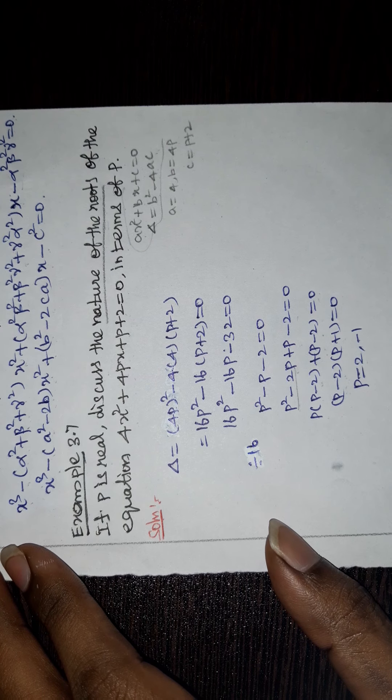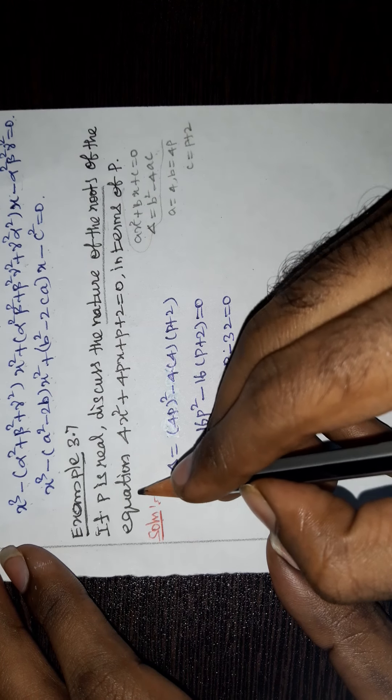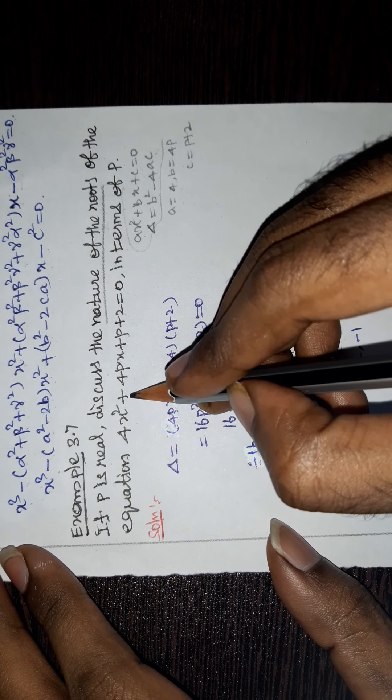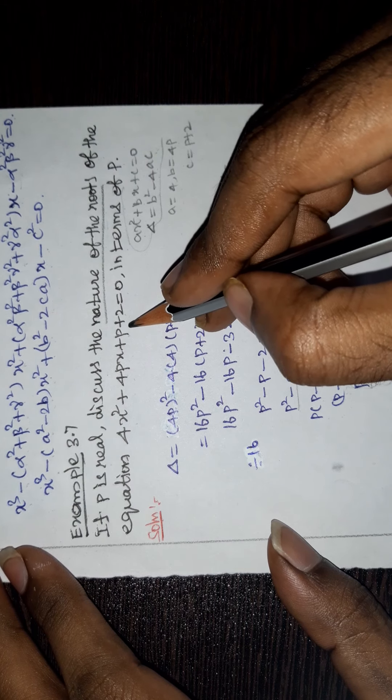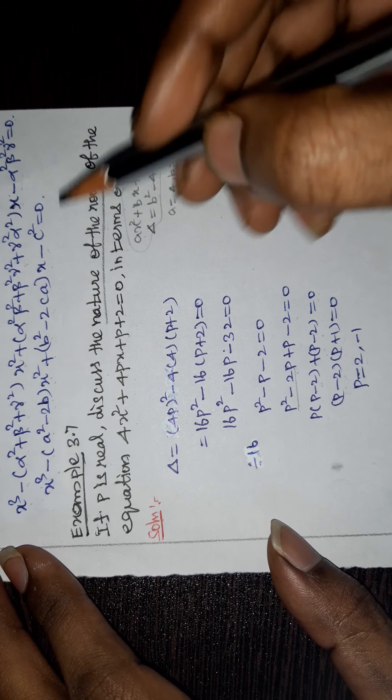Example 3.7. If P is real, discuss the nature of the roots of the equation 4x² + 4px + p + 2 = 0 in terms of P.